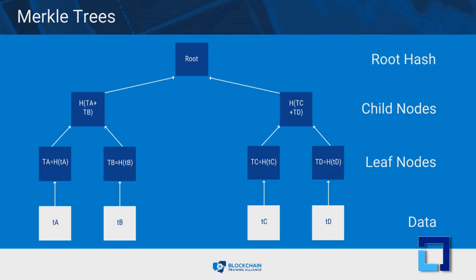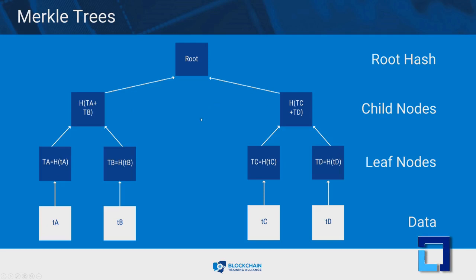Let's take a look at a diagram of a Merkle tree. This diagram consists of 4 transactions represented as transaction A, transaction B, C, and D. The transaction data is then hashed and the resulting hashes are stored in leaf nodes represented as H, B, C, and D. Nodes are repeatedly hashed in pairs and the resulting hashes are stored in child nodes until only one node remains — the Merkle root, or root hash.